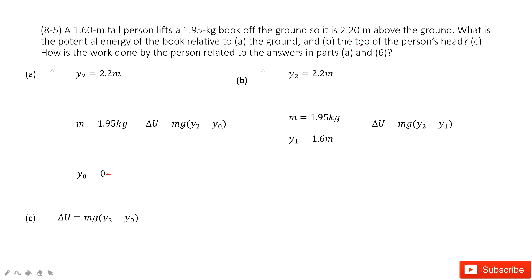The second one, we choose the reference point at the top of the person's head, and then we need to find the potential energy. In this case, the reference point is y1, 1.6 meters. So above 1.6 meters,